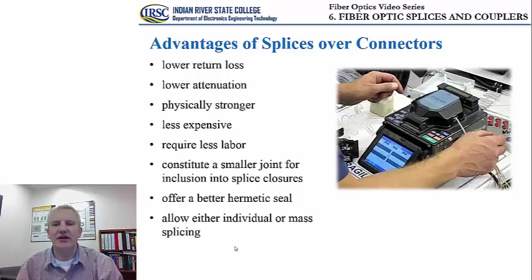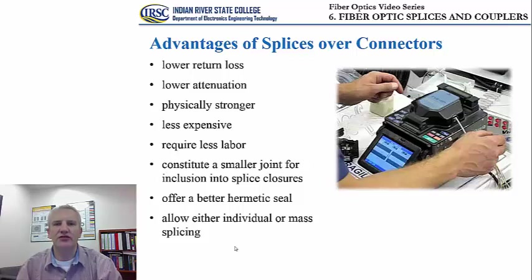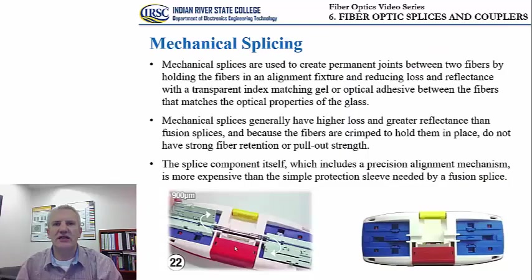Splices require less labor than installing a connector onto an optical fiber. The joint is also significantly smaller relative to the size of connectors, making them convenient for use in splice closures. Splices also offer better hermetic seal. It is also important to mention that splicing can be performed on individual fibers or on groups of fibers, which significantly reduces the time required to establish the connection, as opposed to connectors where each must be installed individually.